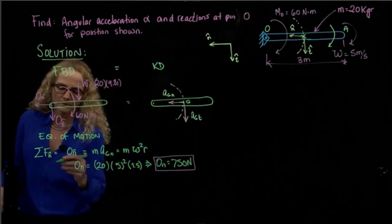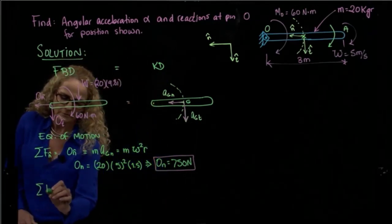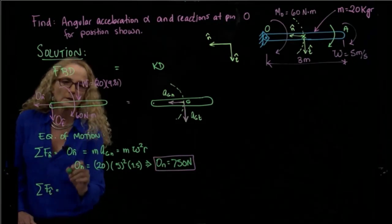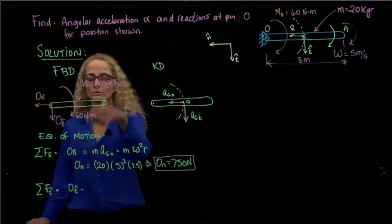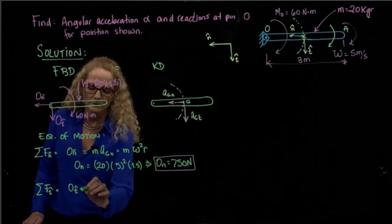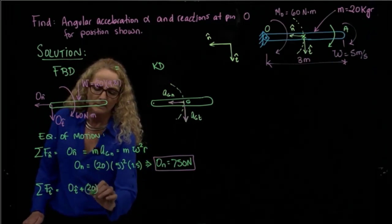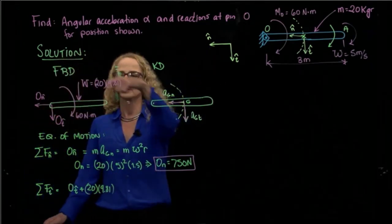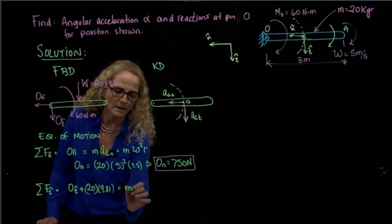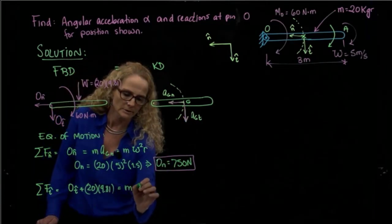The second, so we can do the same, but for the direction in tangent direction, and we have O_T. Here we do have the weight as well, which is 20 times 9.8. I put a positive because my positive direction goes down, and then that will be equals to the mass and the tangent acceleration.